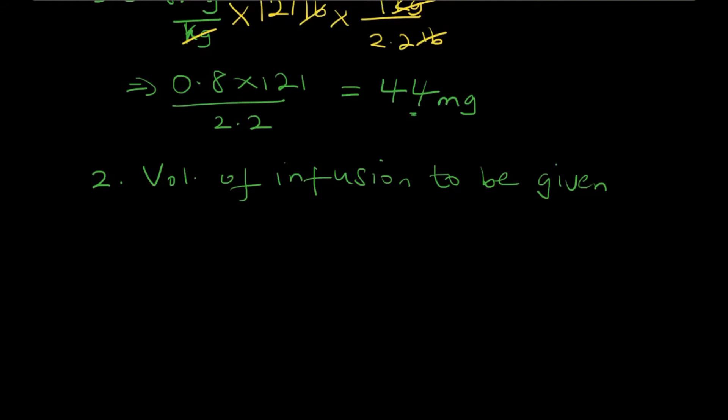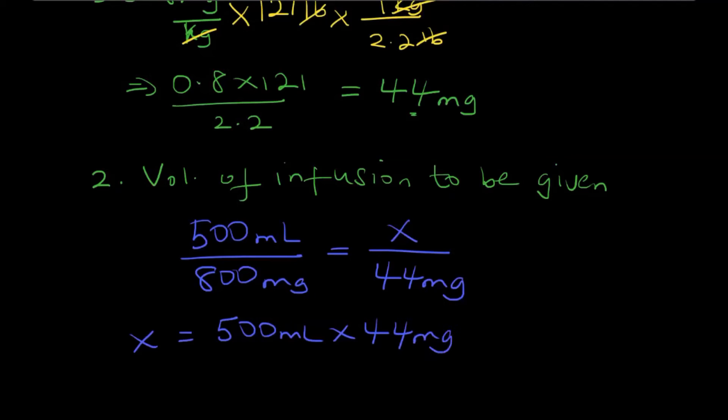If we have 500 milliliters containing 800 milligrams of aminophylline, then we can find the volume that will give us 44 milligrams based on this proportion. Solving for the unknown, x equals 500 mL times 44 mg divided by 800 mg, which gives you 27.5 mL.